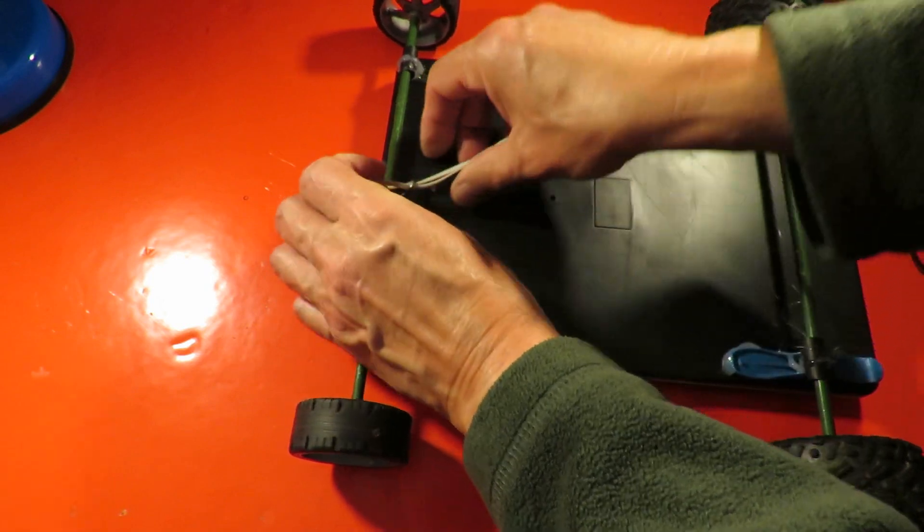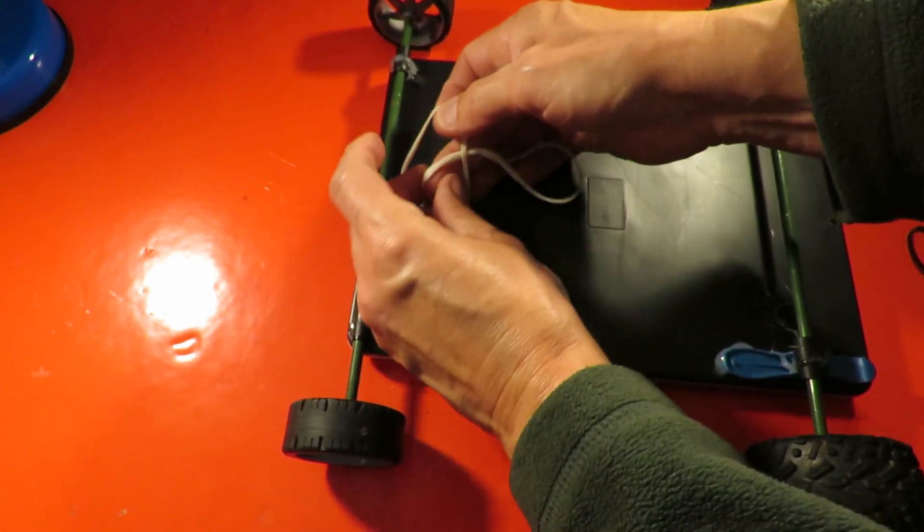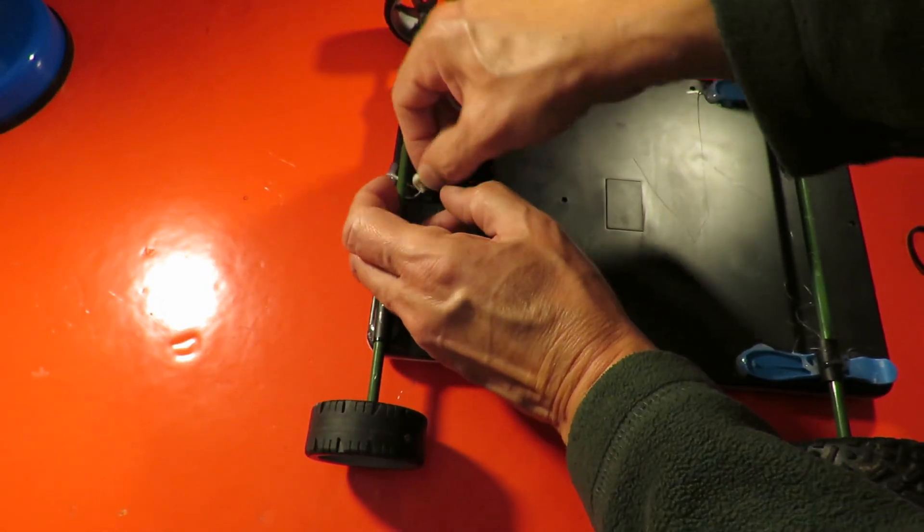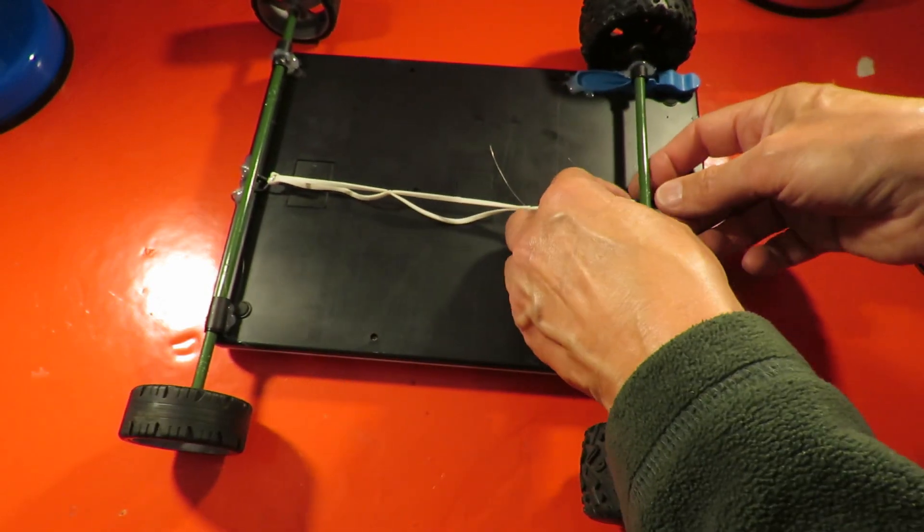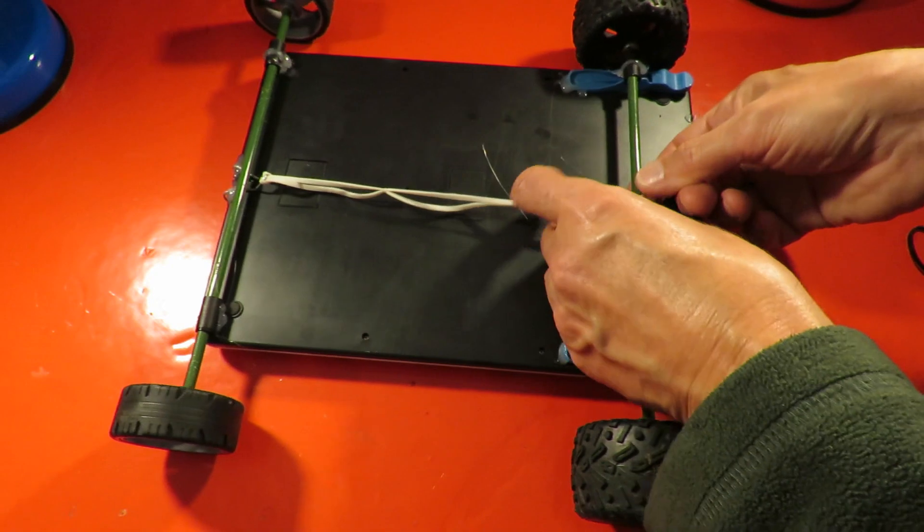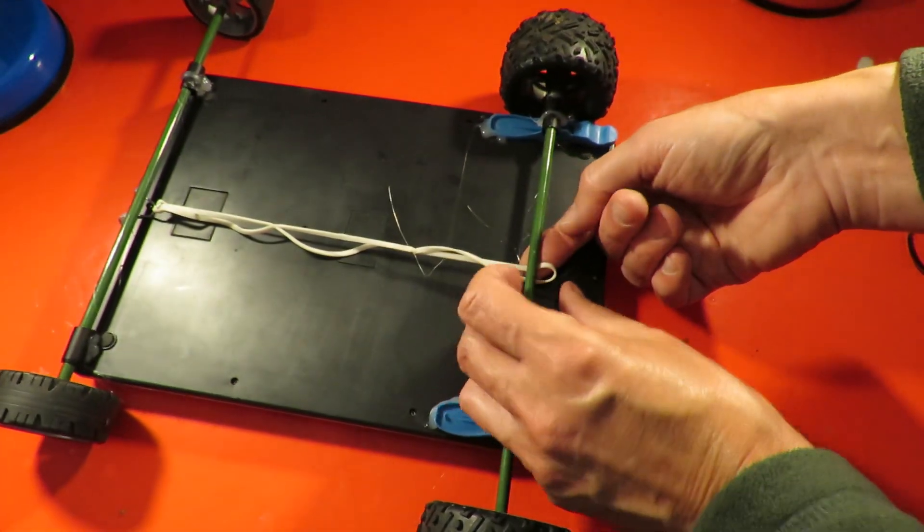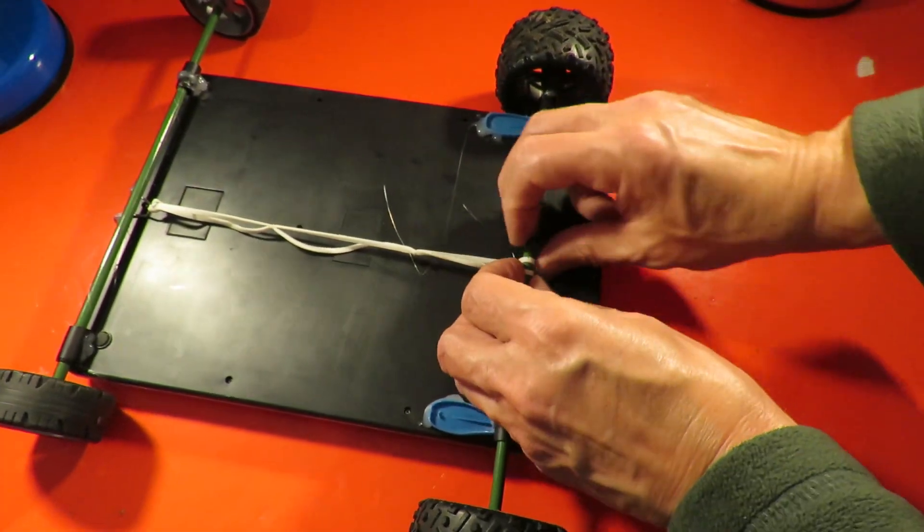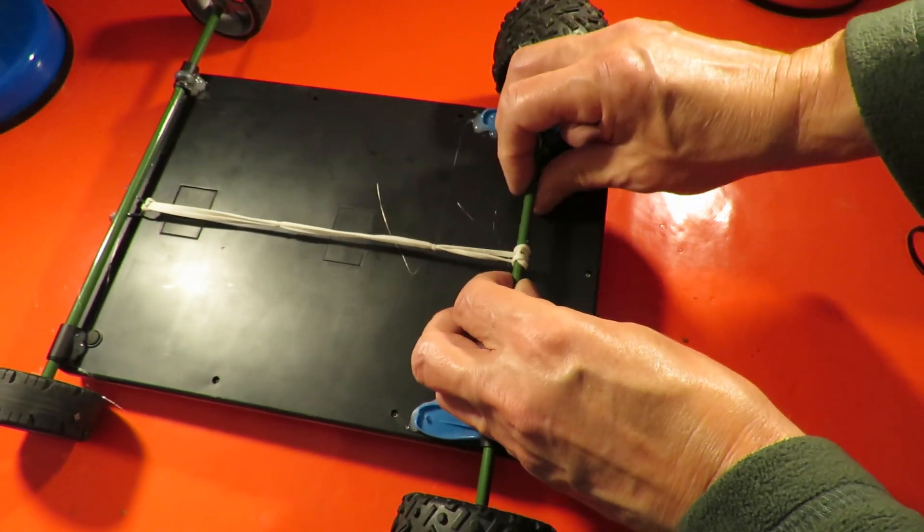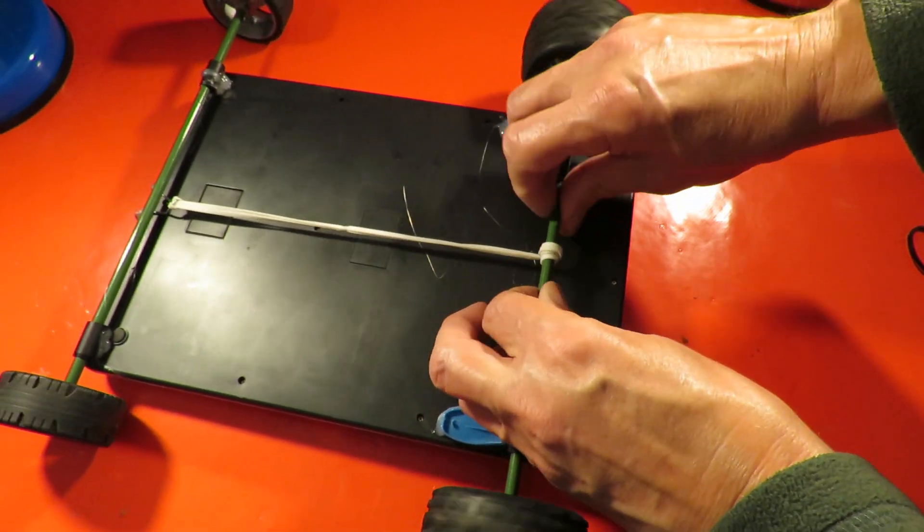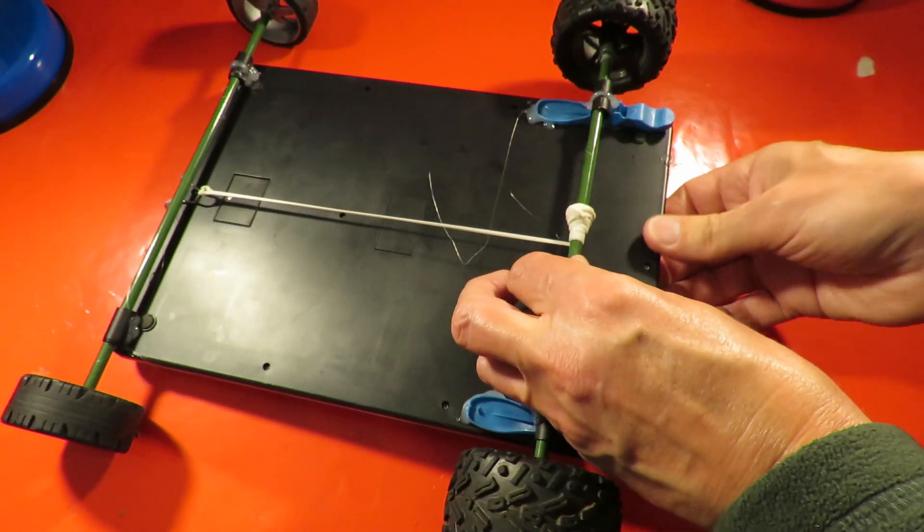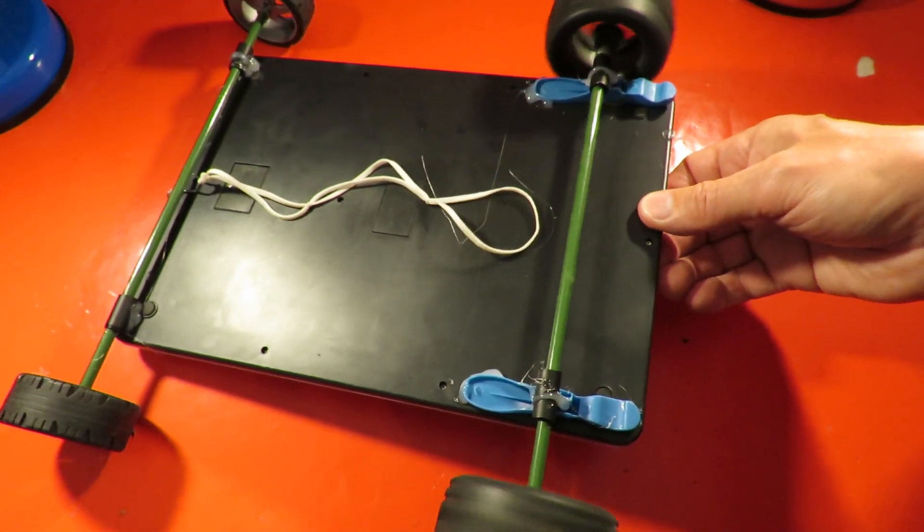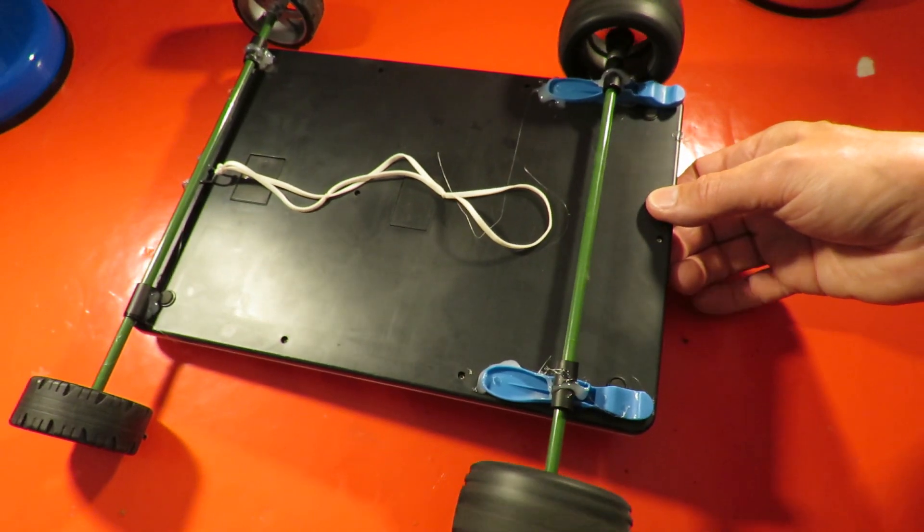Stick that through there, get hold of that, push it through itself. There we are. So you can see the rubber band goes around so it wraps over the top of itself. That holds it in place. Wind it up and let it go.